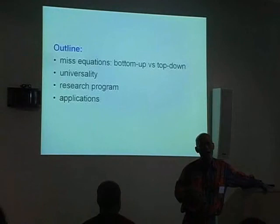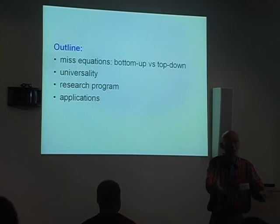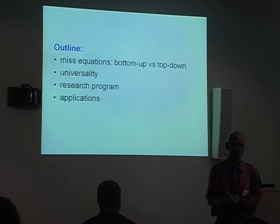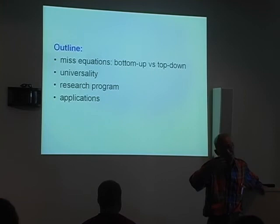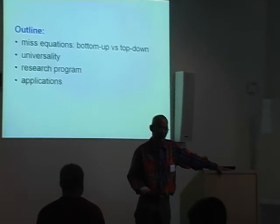It's about the cache miss equation, and what's new about my approach is that I'm going at it top-down rather than bottom-up. It's definitive in a sense that in order to be definitive, I believe it's got to be universal. Once I explain what I mean by that, I can explain what the program is about. And there's always the question: what's the use if the program succeeds?